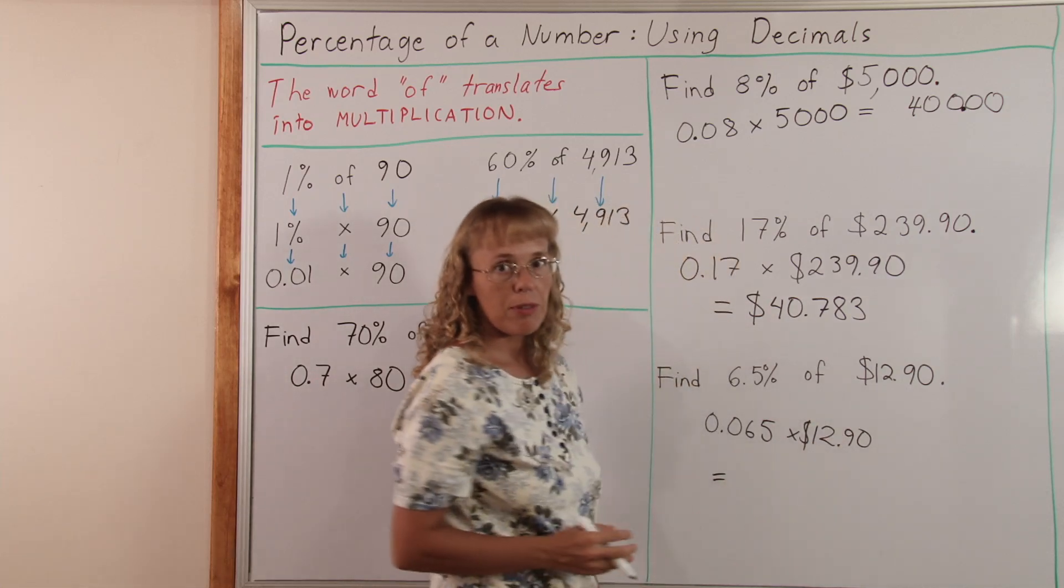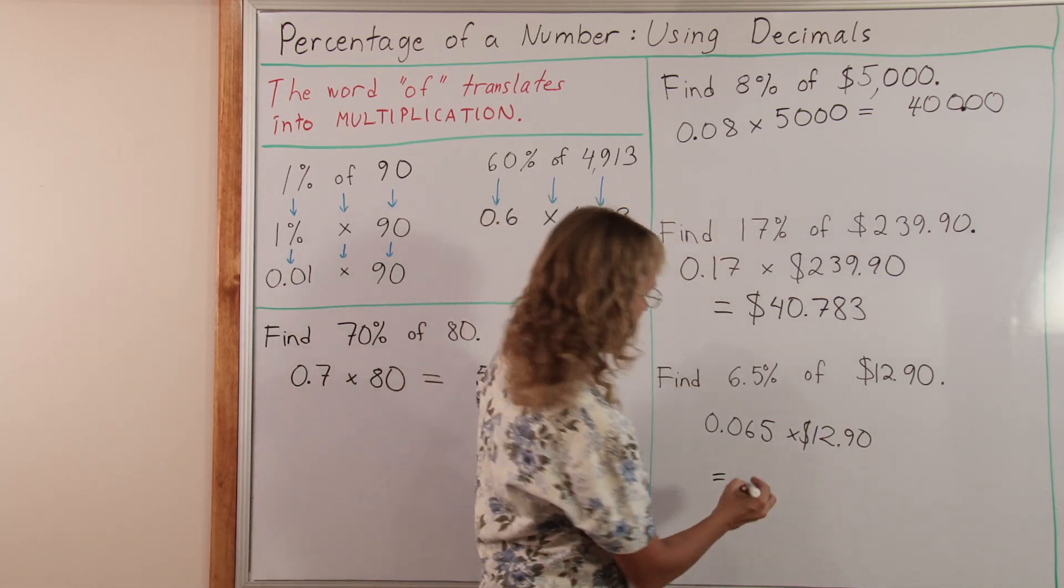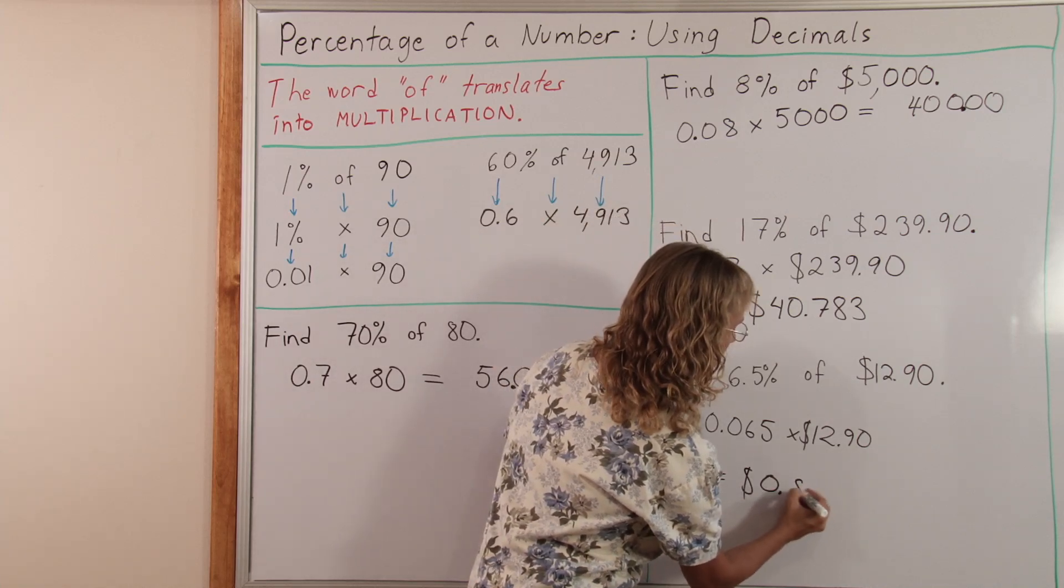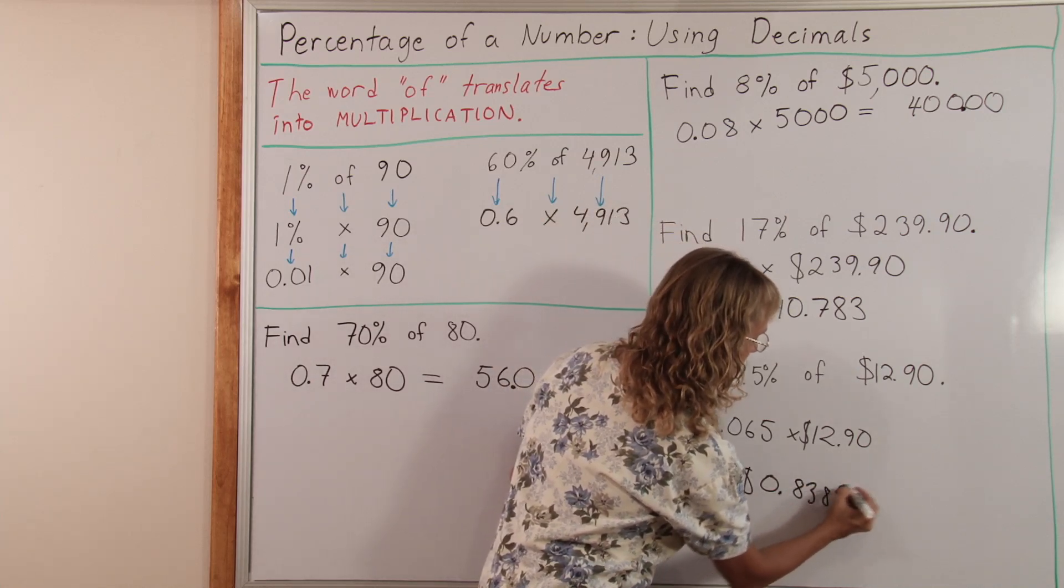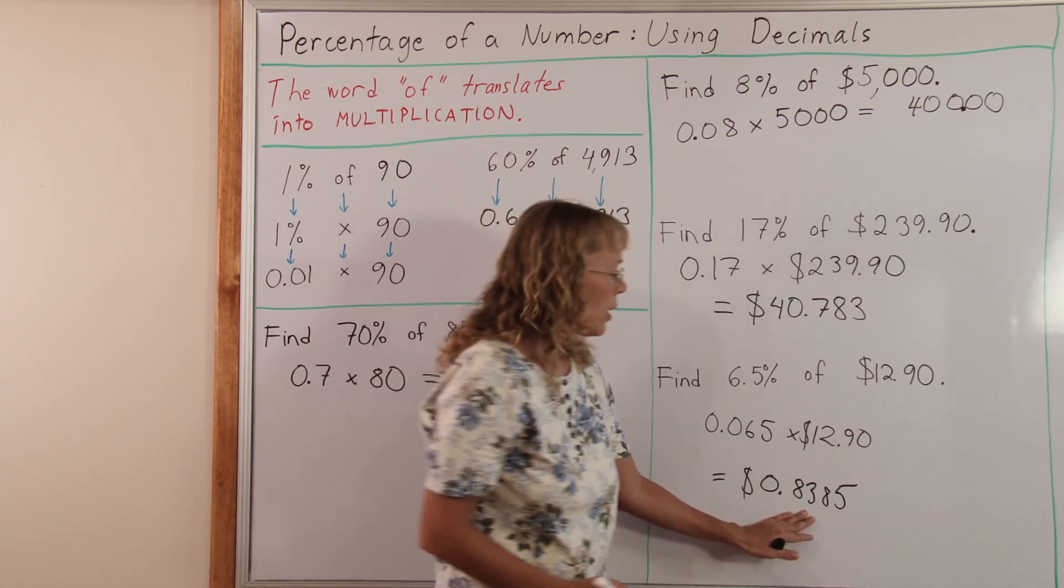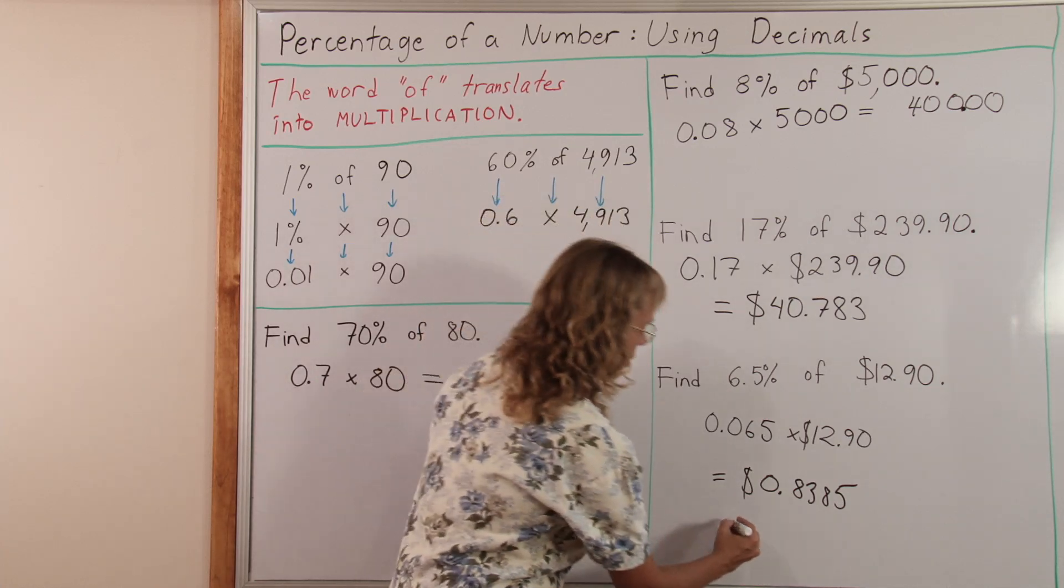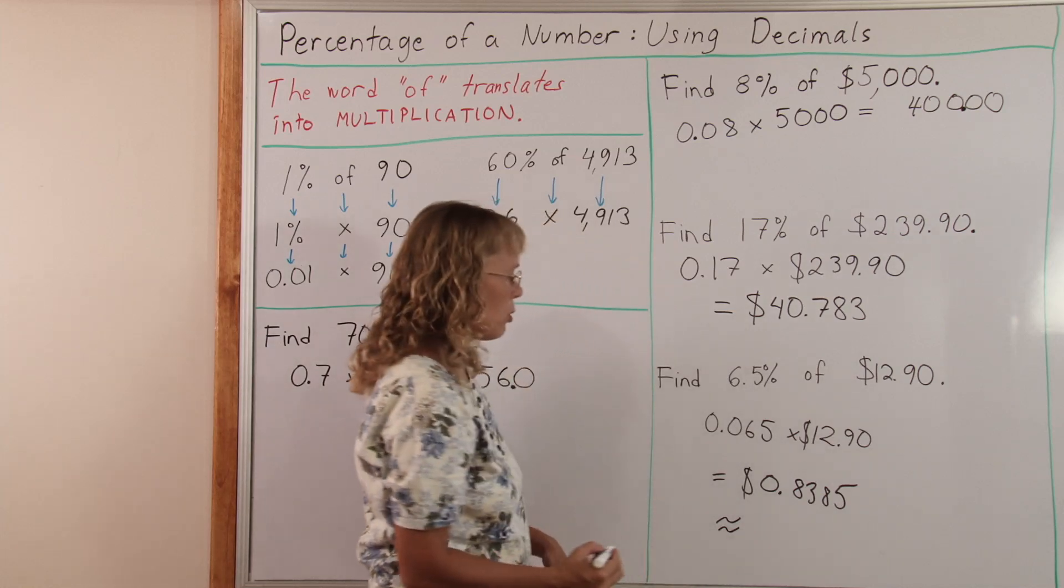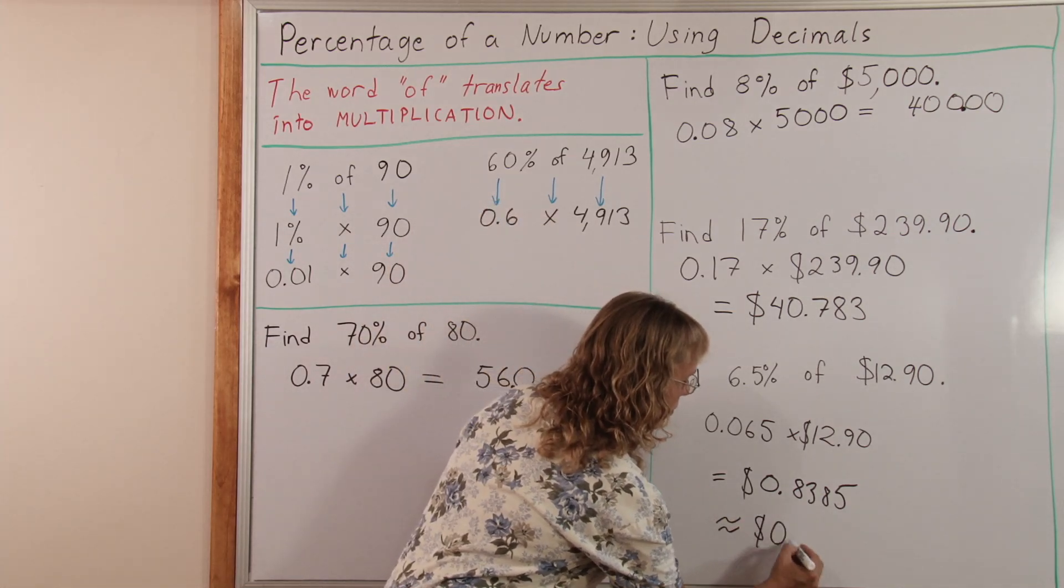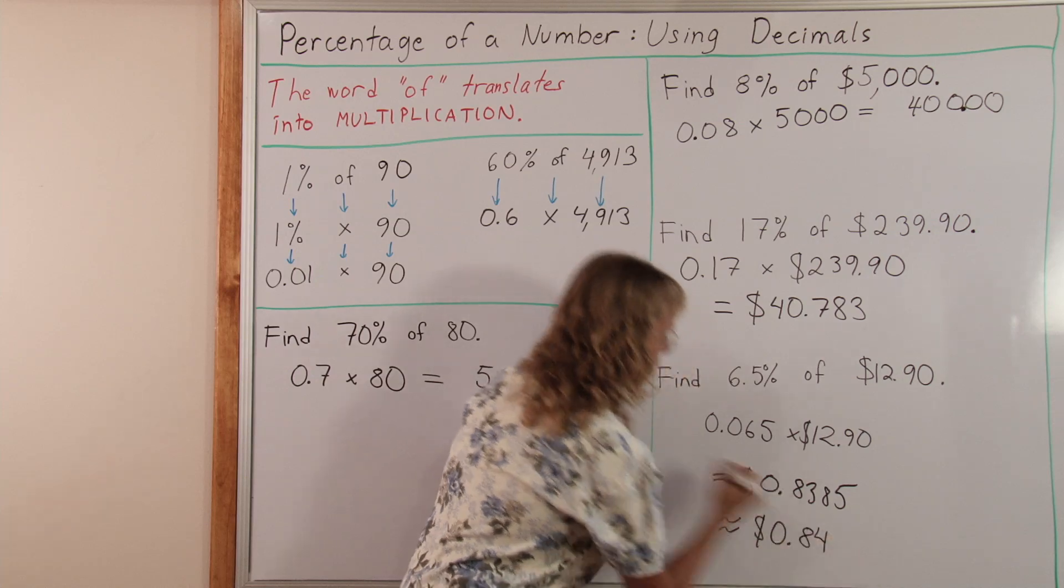Again, I've calculated this beforehand. So the answer is with the calculator 0.8385 dollars. Or a little over 83 cents. If this is in a store and it has to do with prices, we have to round it to the nearest cent. 84 cents.